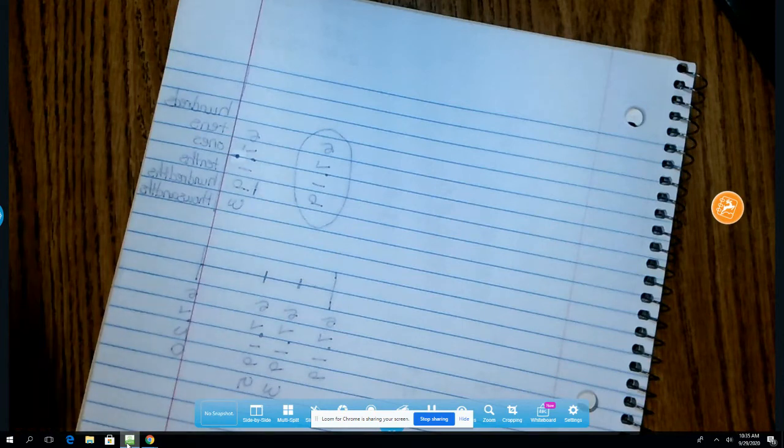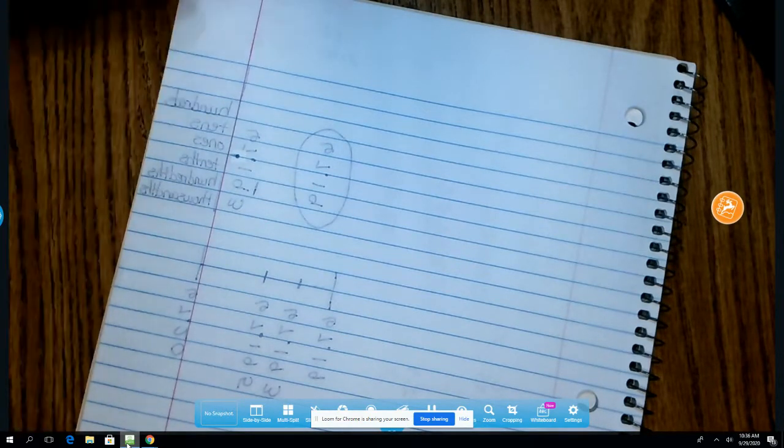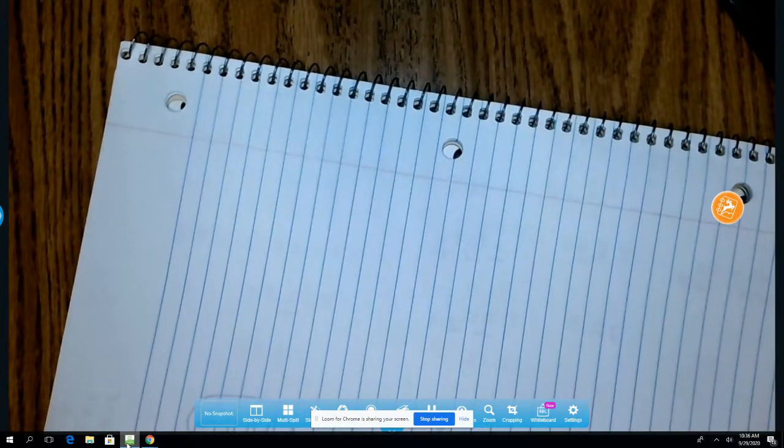Lesson nine, we are going to be adding decimals and there are three tricks to adding decimals that make it much easier. First thing is, this is a good time to turn your paper sideways. It's going to help you keep things lined up and with decimals that's important.